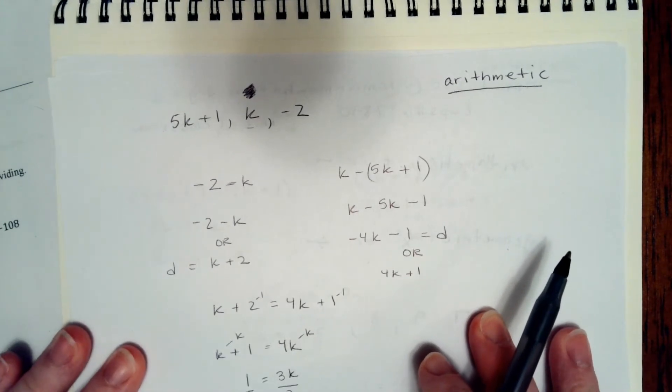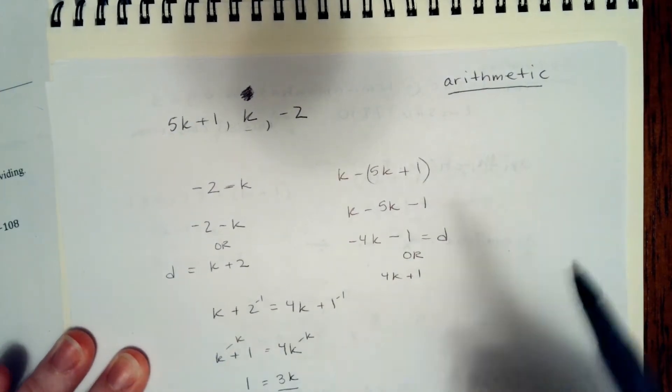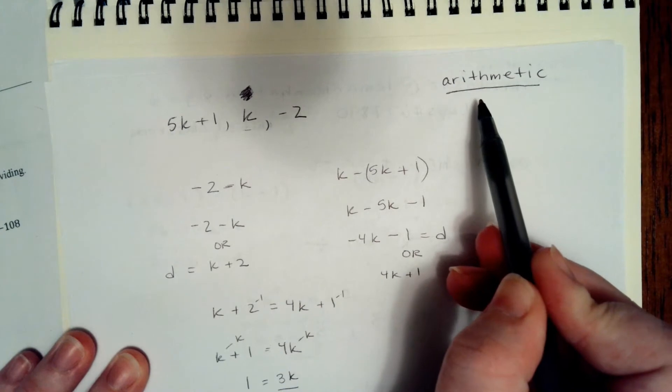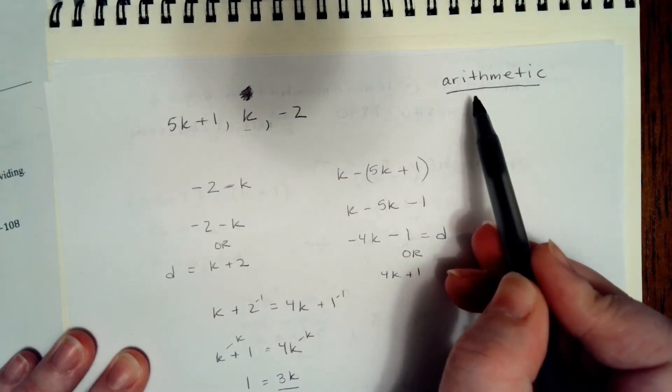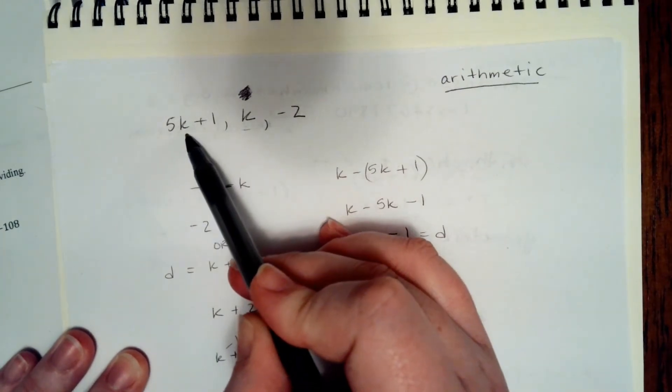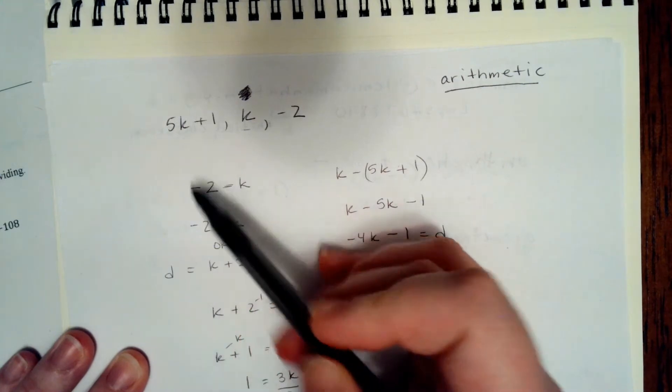Okay, so what we're going to look at here is how to solve this arithmetic sequence. We've got to solve for k and find the next two terms.